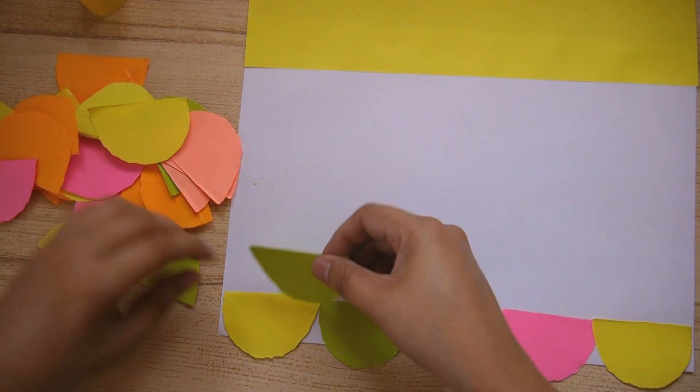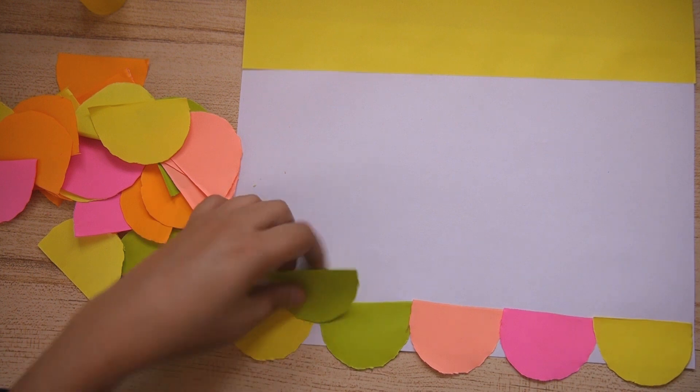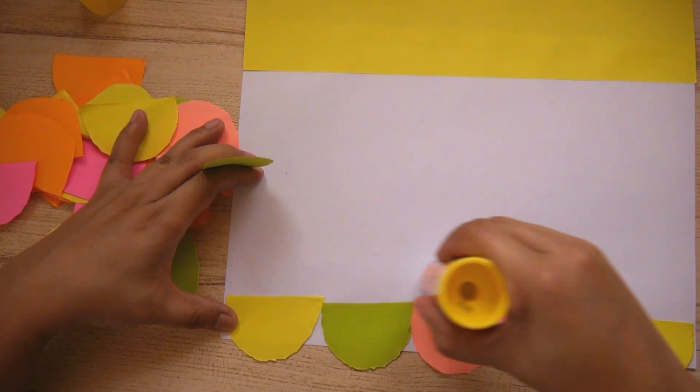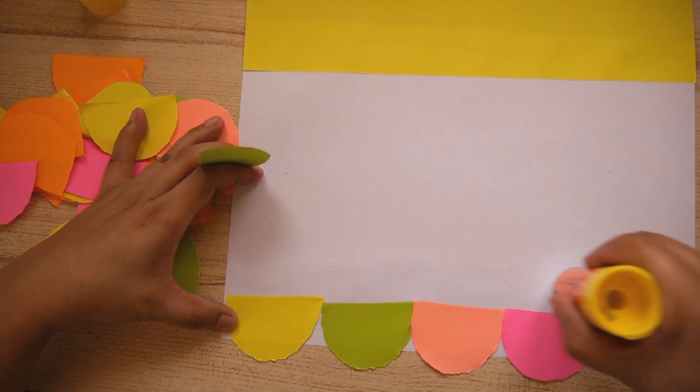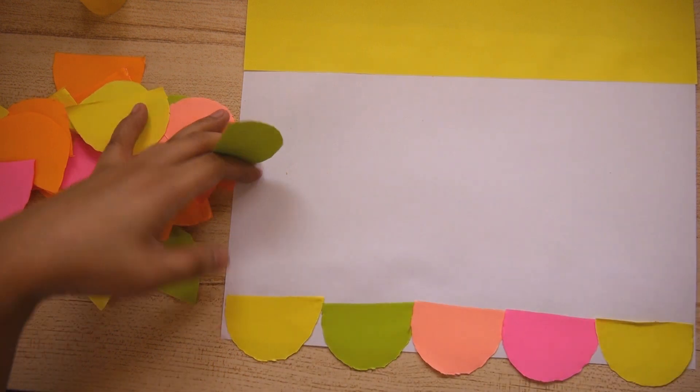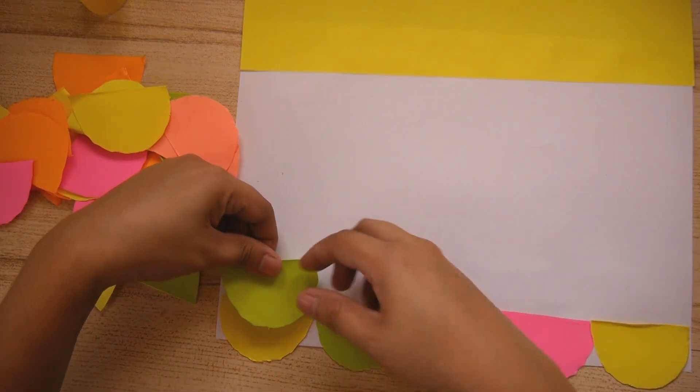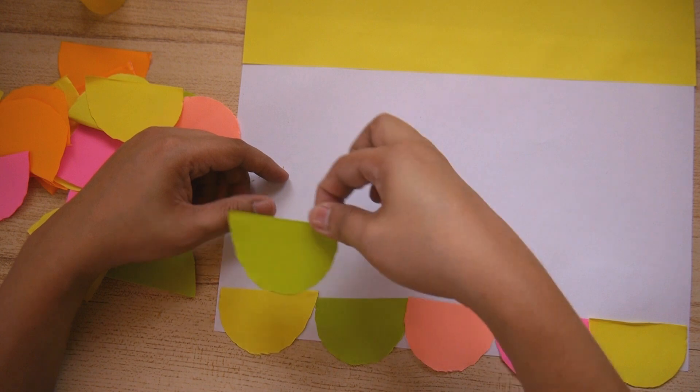For the next row you're going to put it between two fish scales on the bottom. But you can also put it right above the first fish scale. That's okay too. But I prefer to do it in between two fish scales.